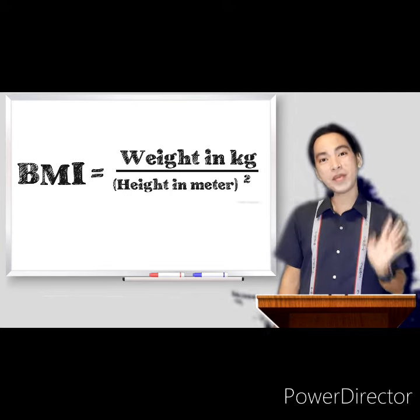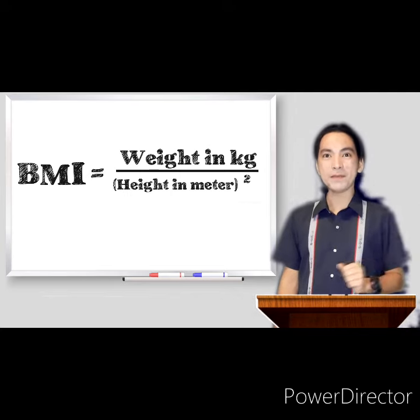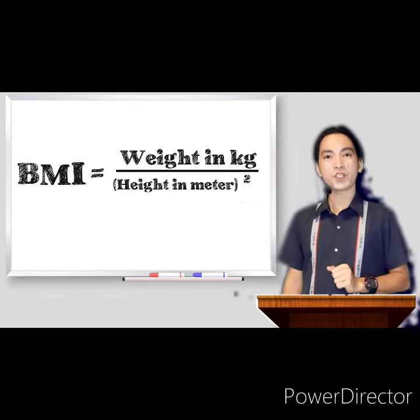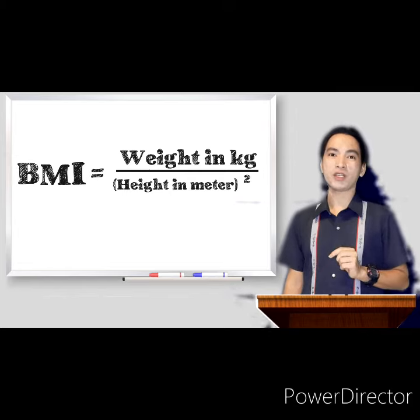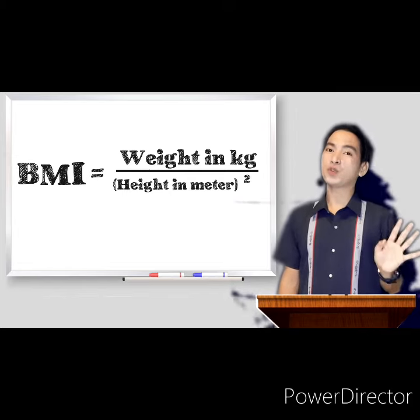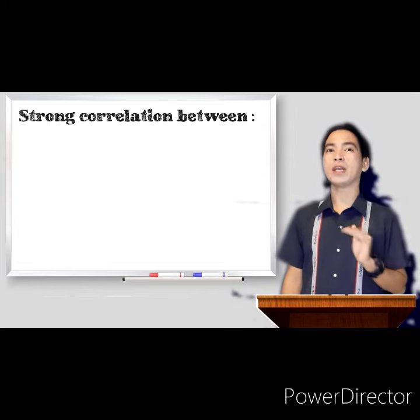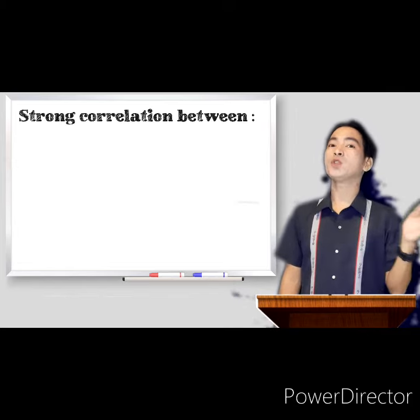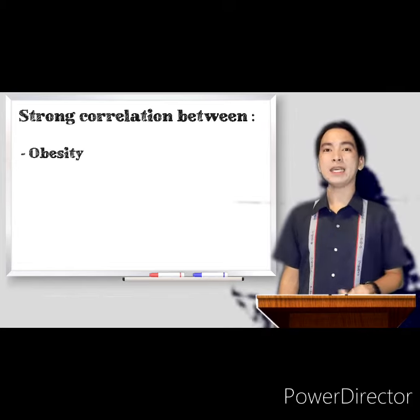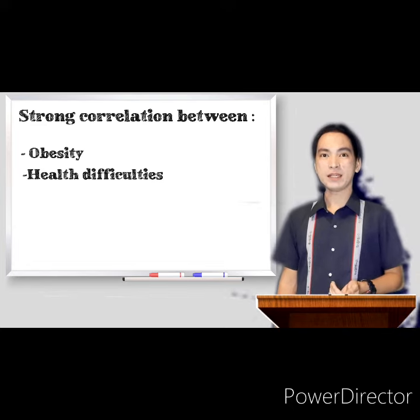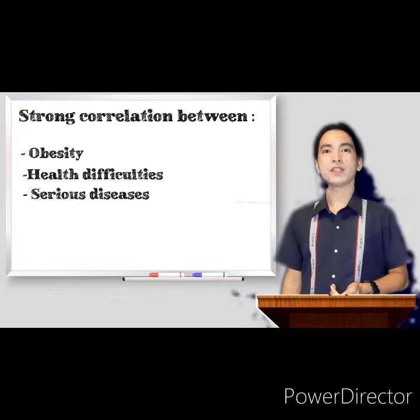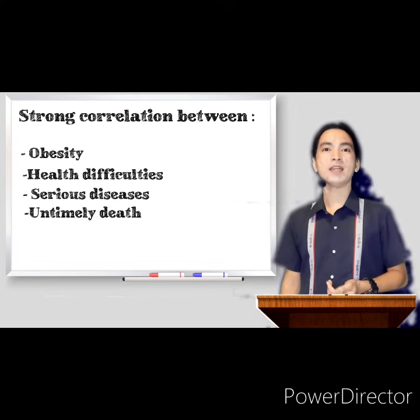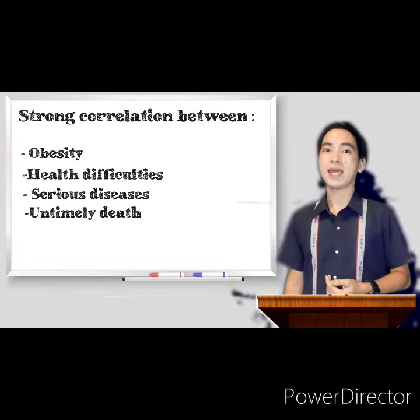The reason why BMI is used for screening the health of the general population is due to the strong correlation between obesity and health difficulties, serious diseases, and untimely death.